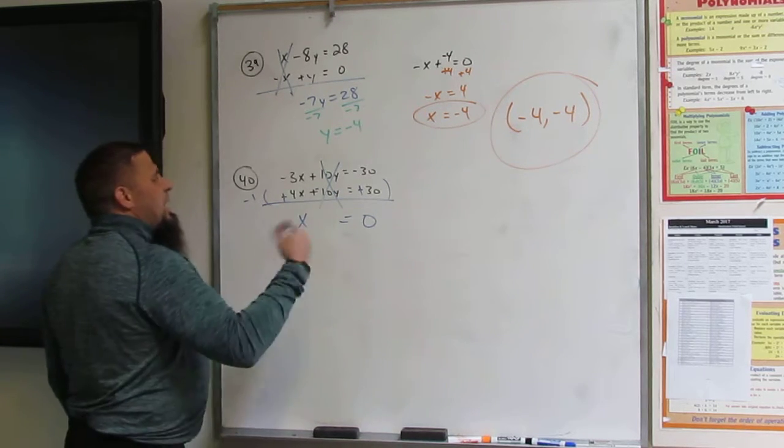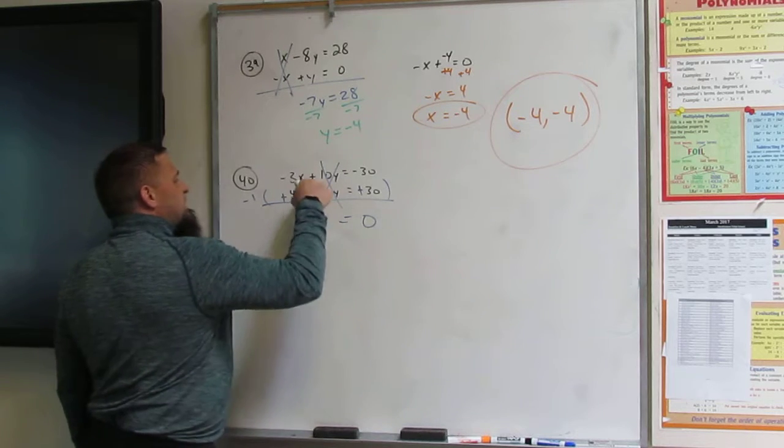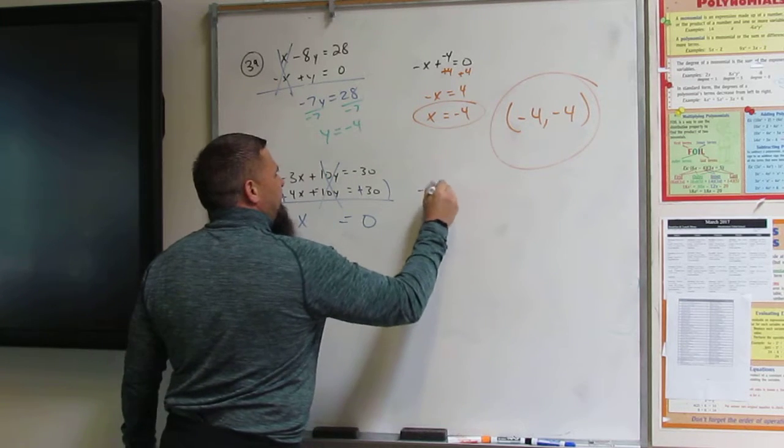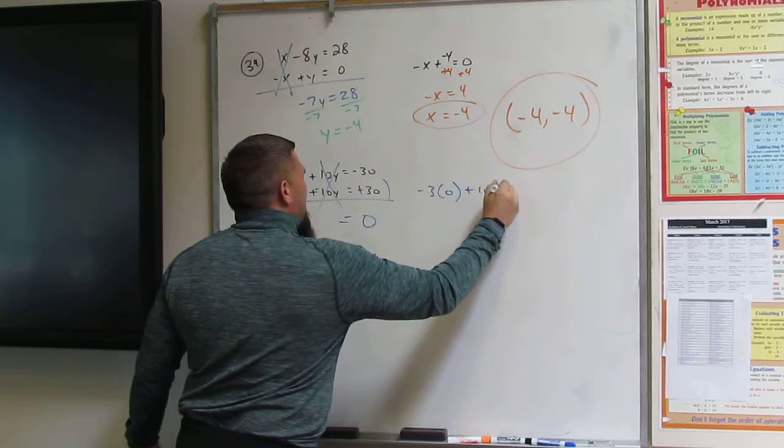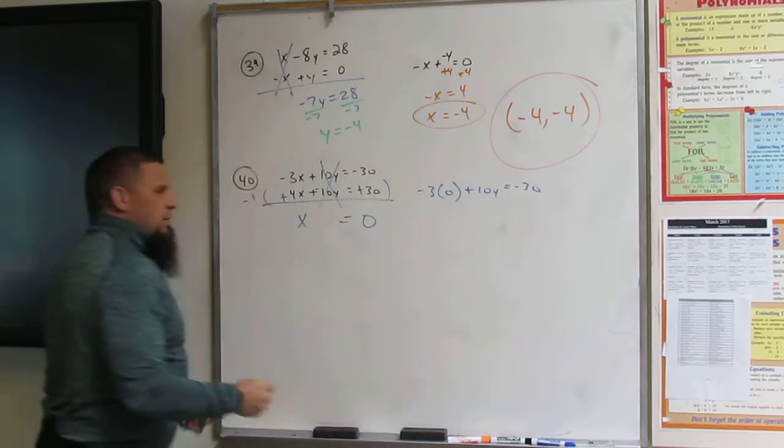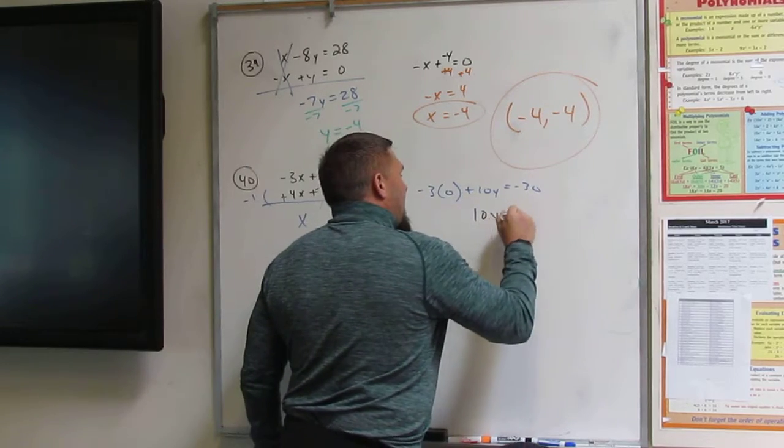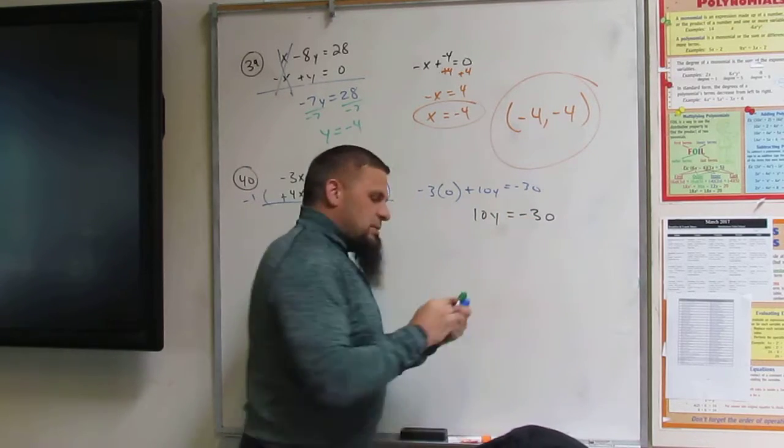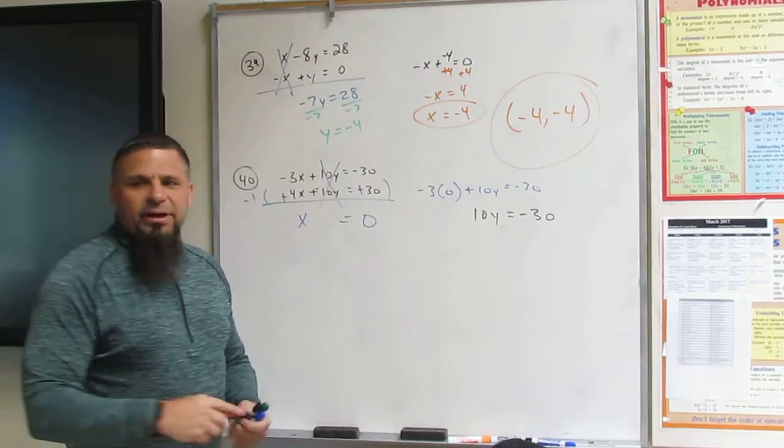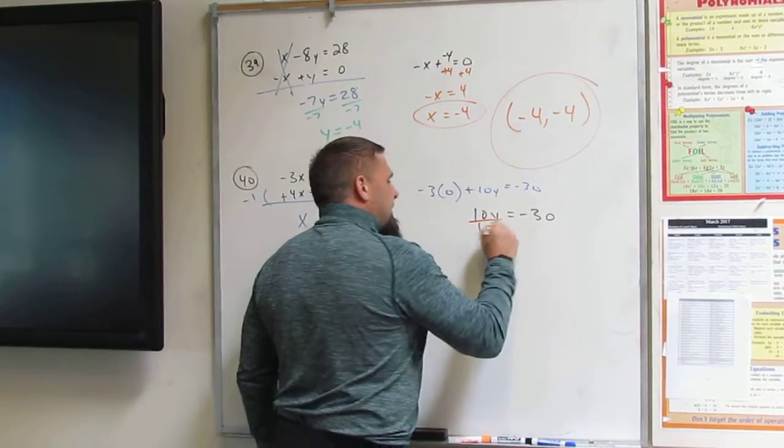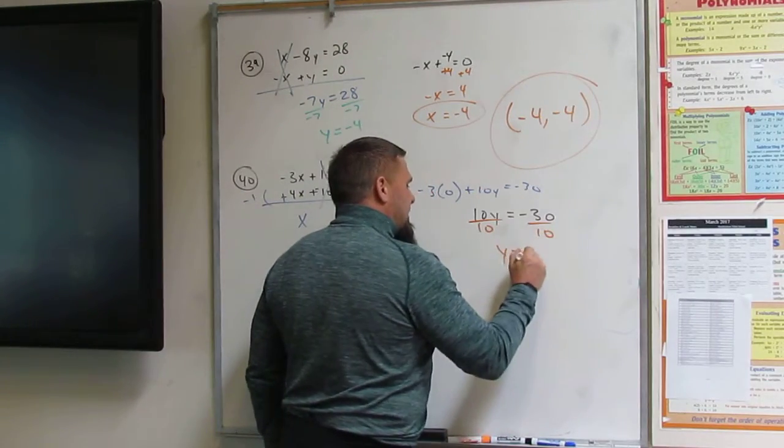So then I'm going to take this top one. Negative 3 times 0 plus 10 times y equals negative 30. Right? So basically, 10 times y equals negative 30. So that means y has to be negative 3. Because I divide by 10, divide by 10, y equals negative 3.